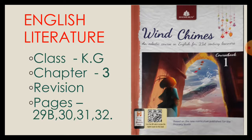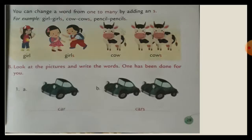Hello children, good morning. Take out your English literature book. See here, wind chimes. Okay, so chapter 3 it is. Chapter 3, pages 29, 30, 31, 32. So first open page 29. Okay, so we will be doing a section of the English literature.